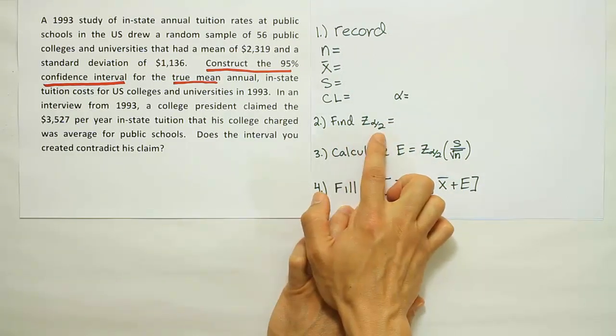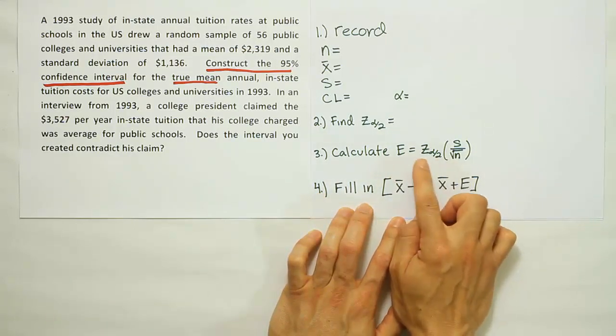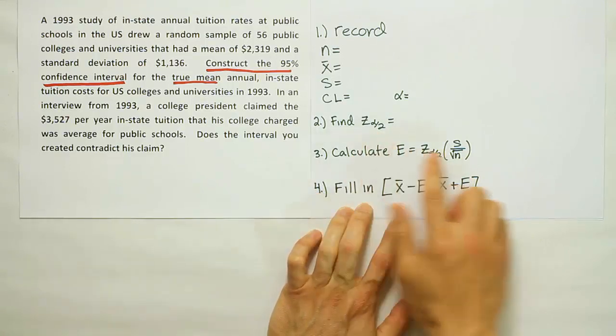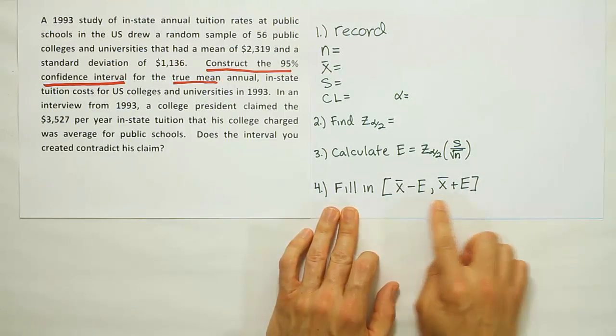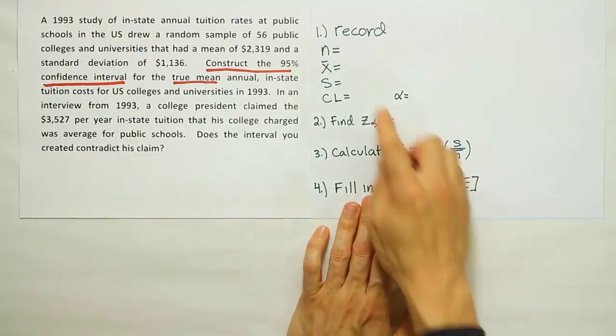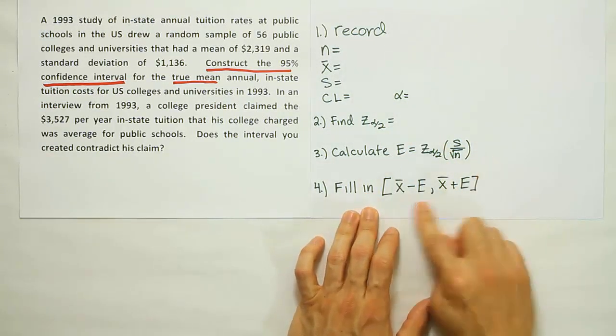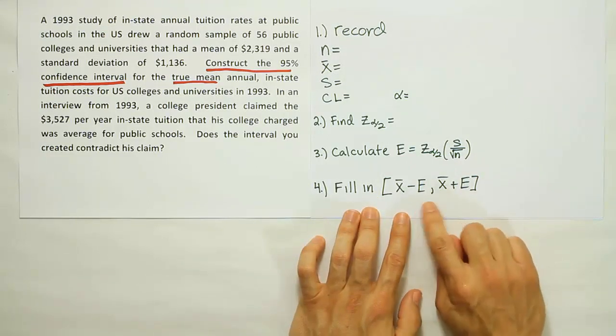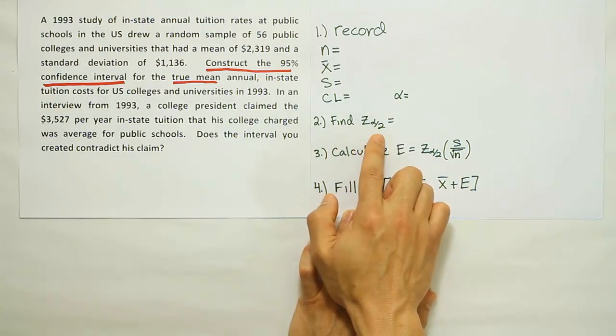Then the next step, you'll need a table value, a critical Z value in this problem. Then we're going to calculate the margin of error using this formula - that critical Z value from step two times the standard deviation divided by square root of N. And finally, we're going to fill in this simple expression which gives us the final step, which is the confidence interval itself. It's a pretty simple four-step approach. Step one is just record-keeping. Step three, you're plugging numbers into a formula. Step four, you're doing the same thing, just plugging in numbers. The only step of any kind of challenge is probably step two, where you have to get a table value because it's not given directly.